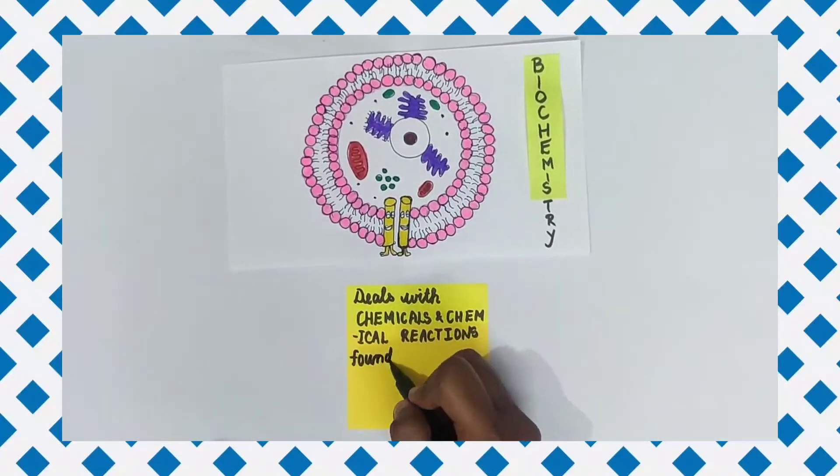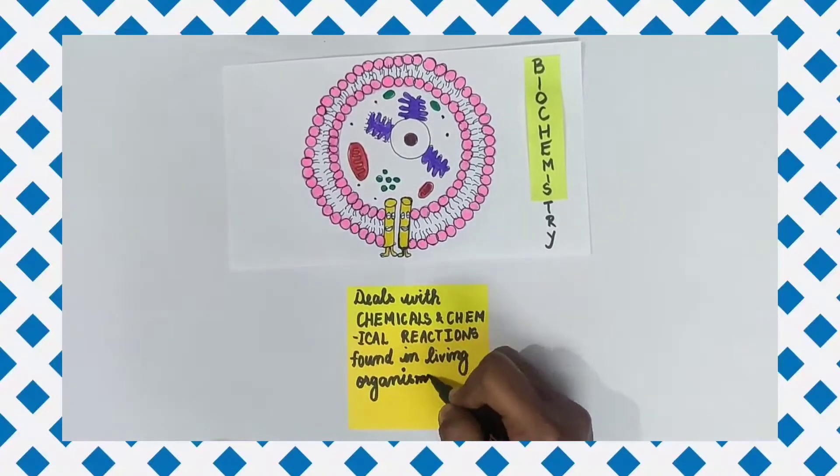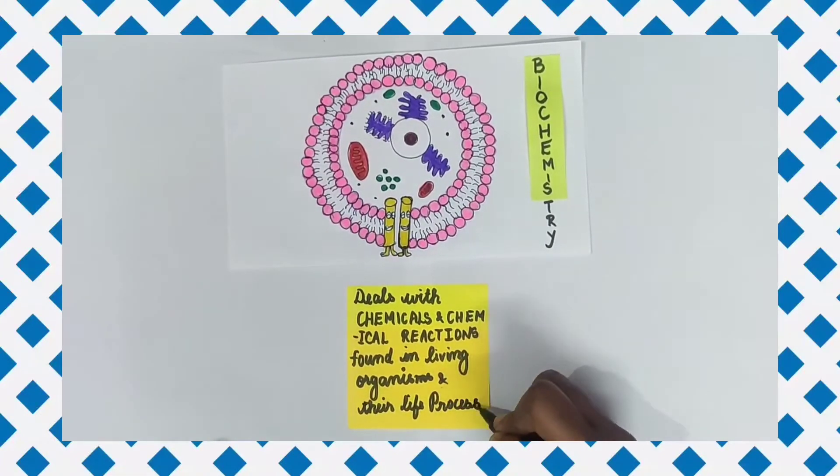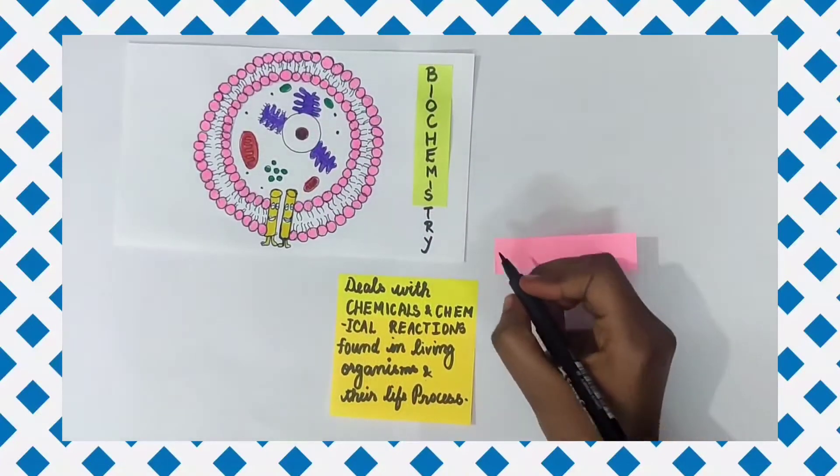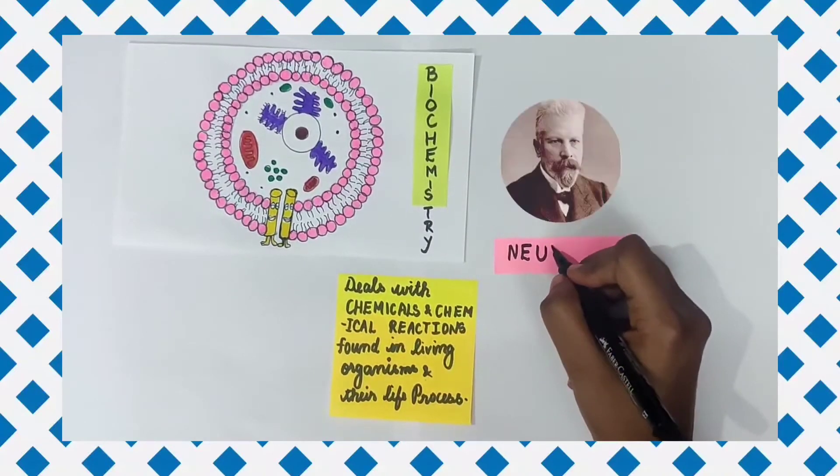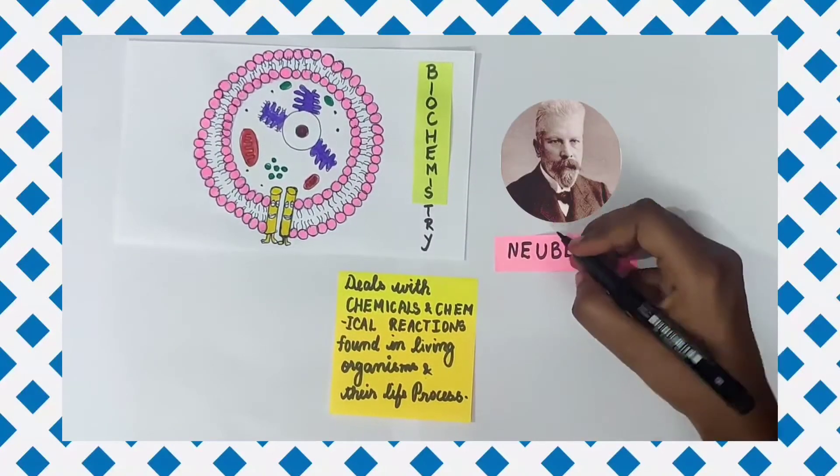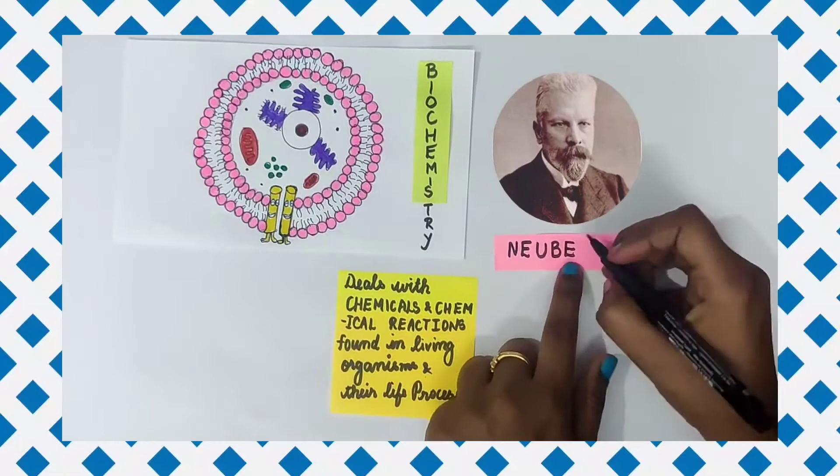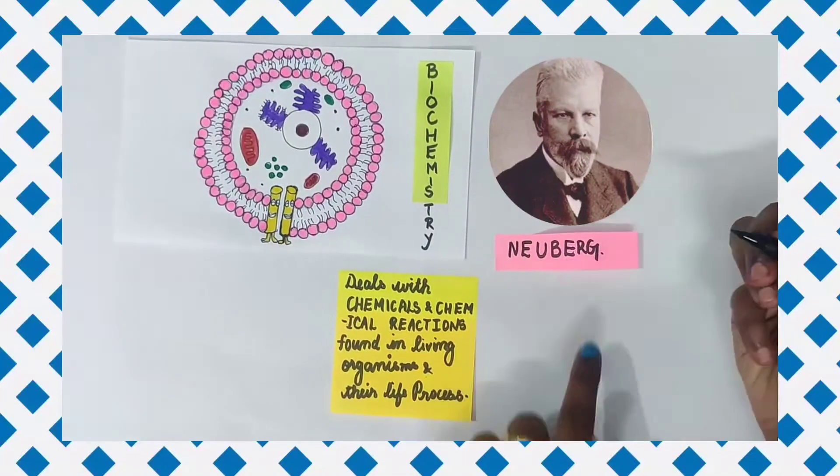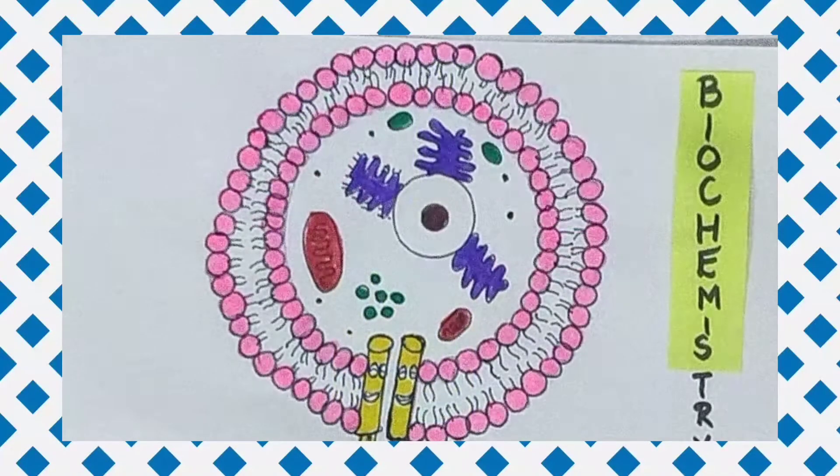Biochemistry is the science that deals with the chemicals or chemical reactions that are found in living organisms and their life processes. The term biochemistry was first coined by a German chemist known as Karl Neuburg in the year 1903.